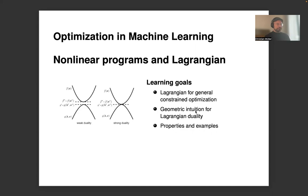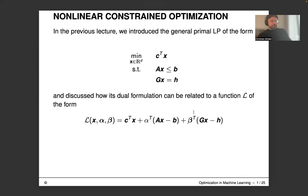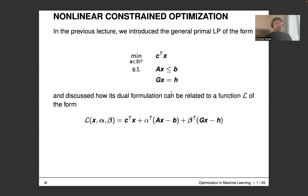Last time in the previous lectures, we introduced the general linear program: minimize c transpose x, subject to the inequality constraint Ax ≤ b and the linearity constraint gx = h. We discussed how its dual formulation can be related to the function L of x, with parameters alpha and beta, where L equals c transpose x plus alpha transpose (Ax minus b) plus beta transpose (gx minus h).